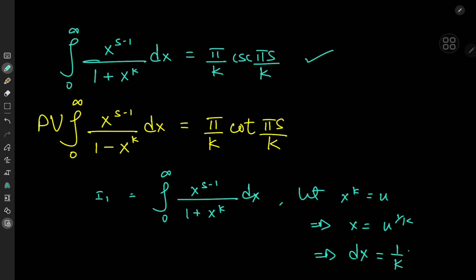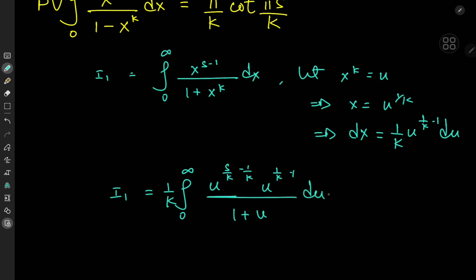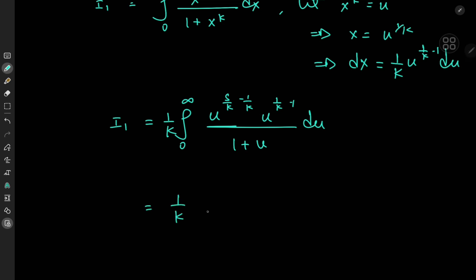dx equals 1 over k times u to the 1 over k minus 1, du. So I sub 1 is the integral still from 0 to infinity, and we have this factor of 1 over k because of the differential element, and we have x to the s minus 1 which is now u to the s over k minus 1 over k, times u to the 1 over k minus 1, divided by 1 plus u, du. Simplifying the numerator, we have 1 over k times the integral from 0 to infinity of u to the s over k minus 1, divided by 1 plus u, du.